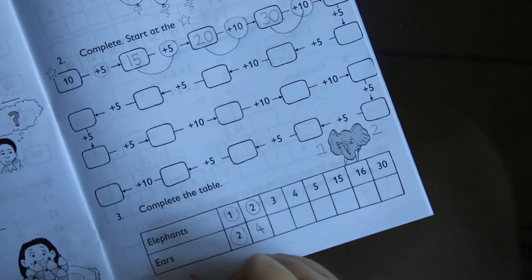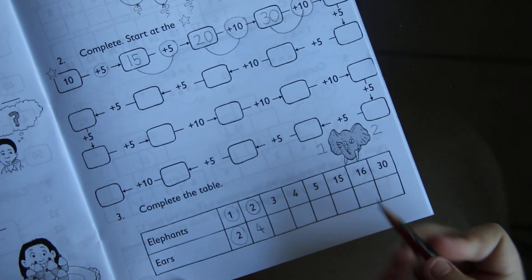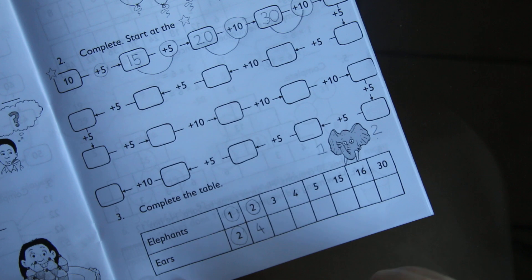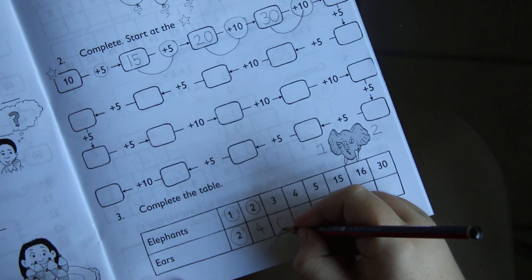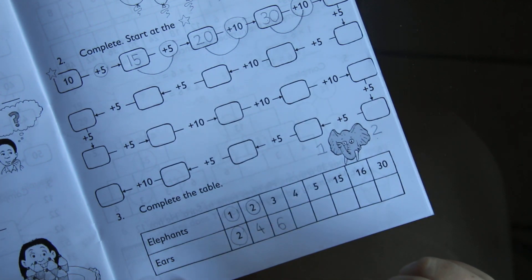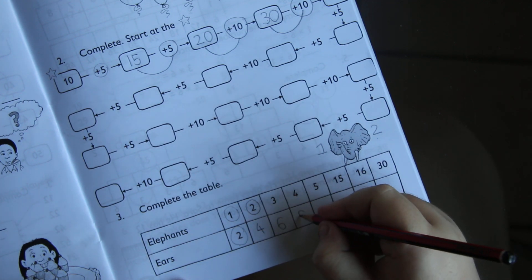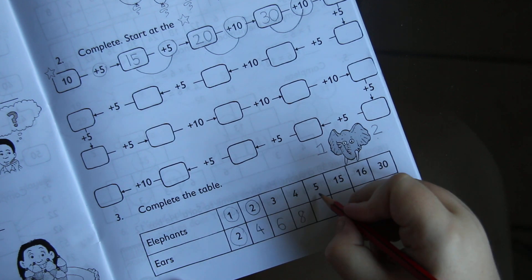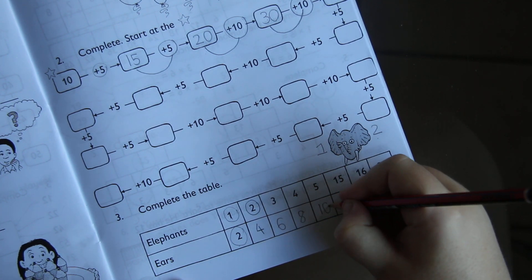So in this box, we are basically doubling. What is three plus three? Six. Four plus four? Eight. Five plus five? Ten.